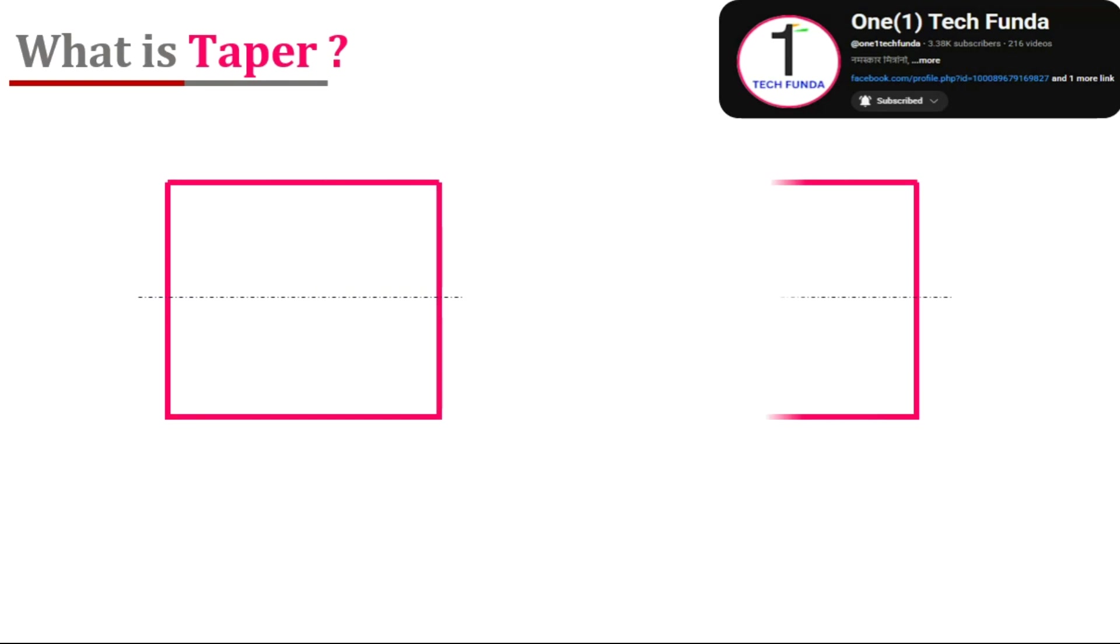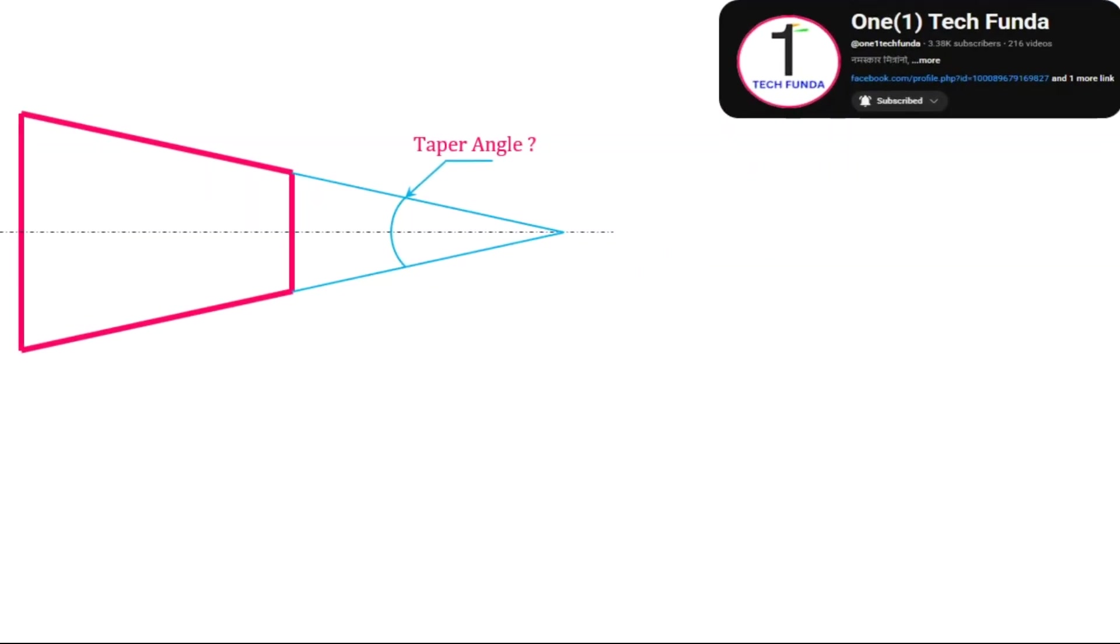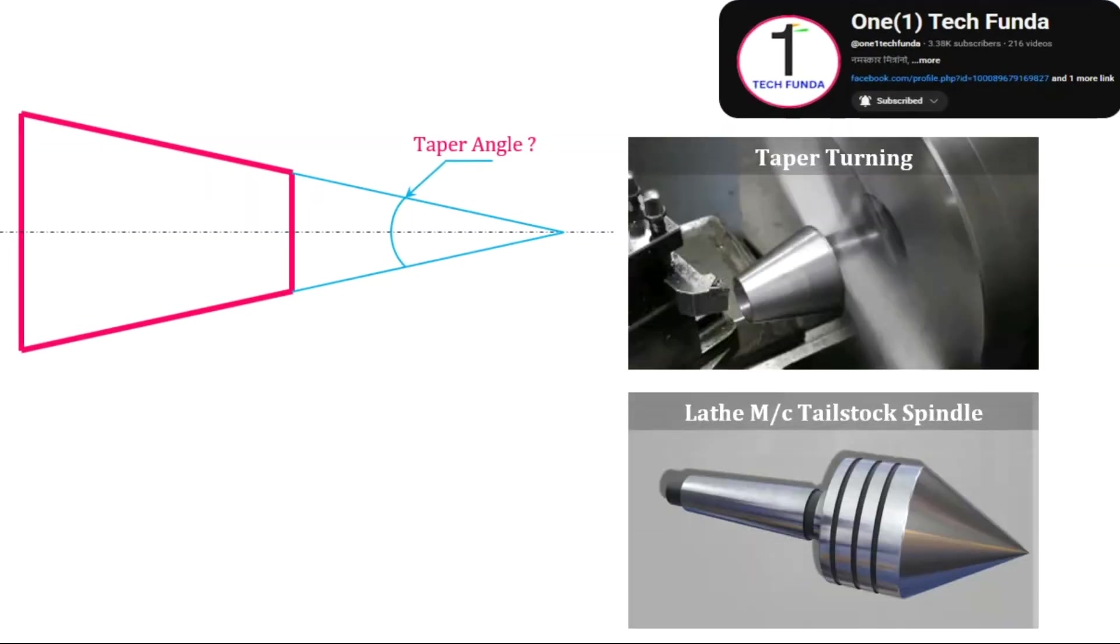What is taper? A taper means a gradual reduction or increase in diameter over a certain length. You'll mostly see it in lathe components, tool holders, and shafts.